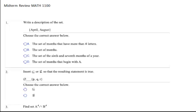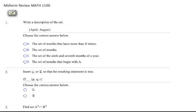So our first question, write a description of the set April, August. We need to write a description that is specific enough that any other person would also come up with April and August. The set of months that have four more letters would include many more months. The set of months includes ten more months. The set of the sixth and seventh months of the year is very specific, but April is the fourth month. The set of months that begins with A is going to be what we're looking for. So the answer to this one will be D.